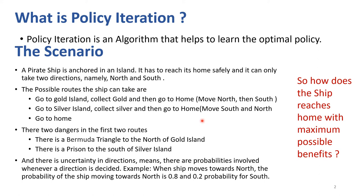There is a small uncertainty involved in the ship's direction. Because of a broken compass, whenever the ship wants to move north, it will not always move north. There is only a 0.8 probability that it will move north, and a 0.2 probability that it moves south instead. Similarly, when it wants to move south, it moves south with 0.8 probability and north with 0.2 probability.